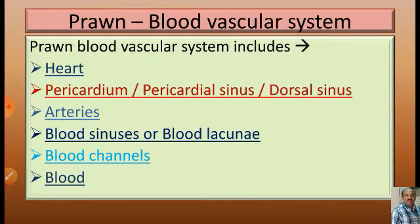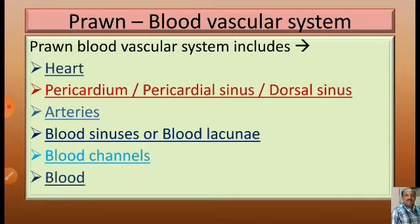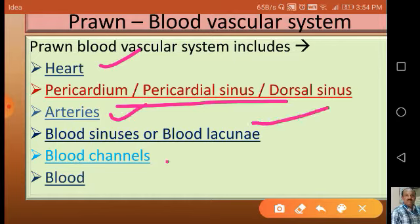The Prawn Blood Vascular System includes: the heart, the pericardium or pericardial sinus (also called dorsal sinus), arteries, blood sinuses or blood lacunae, blood channels, and blood itself. We will discuss each of these in detail.